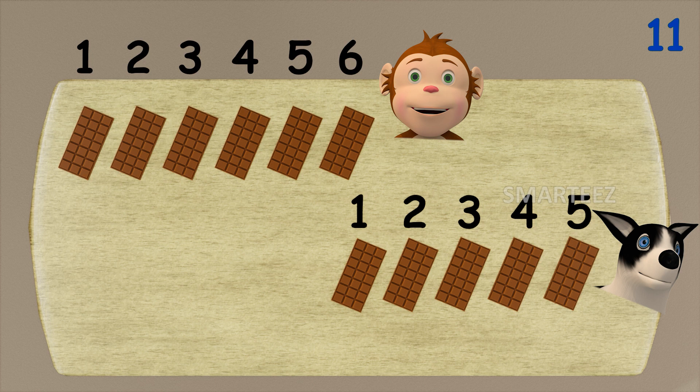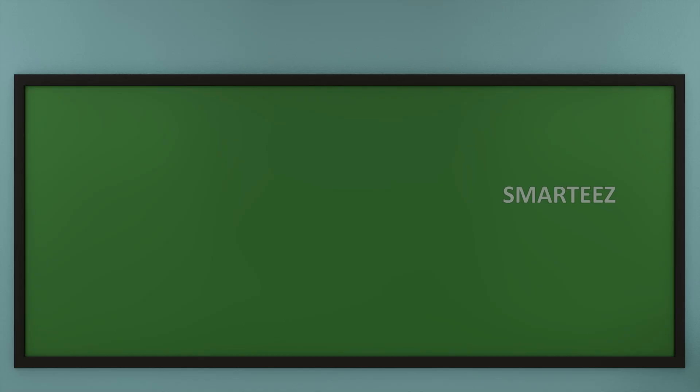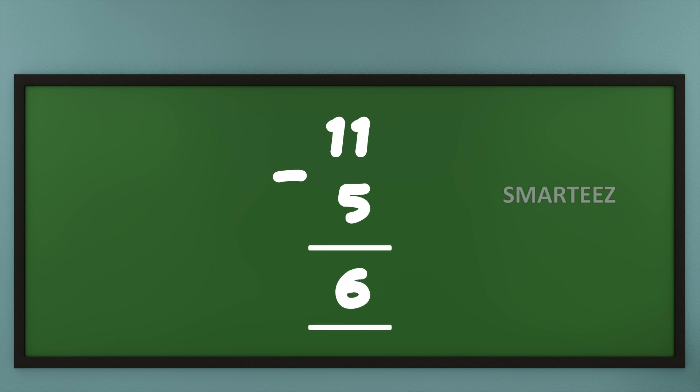This is what we call a subtraction. We use a minus sign for subtraction. Here we say when we subtract five from a total of eleven, we get six remaining. Is where subtraction comes in.